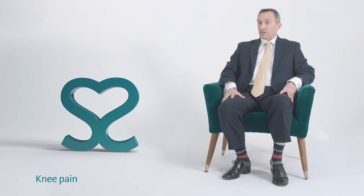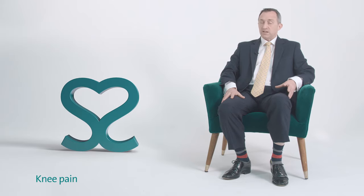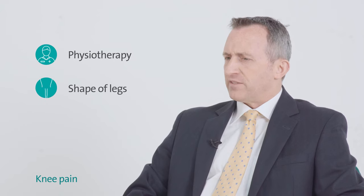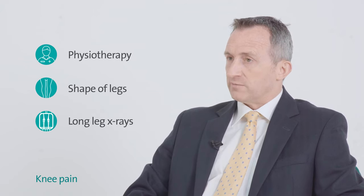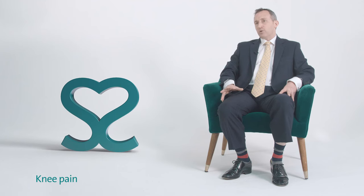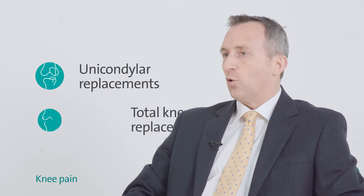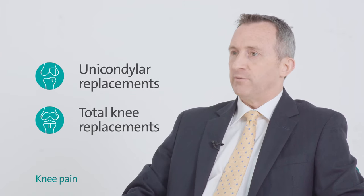In terms of treatments, we need to personalize that to you. We'd look at your lifestyle, any risk factors, possibly weight, think about physiotherapy, and the shape of your legs. We may want to get long leg x-rays to look at the alignment — a bit like checking the tracking on your tires — and then we move on to things like partial resurfacing, unicondylar replacements, or total knee replacements.